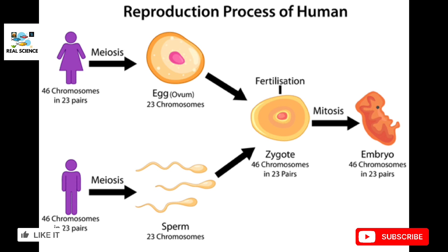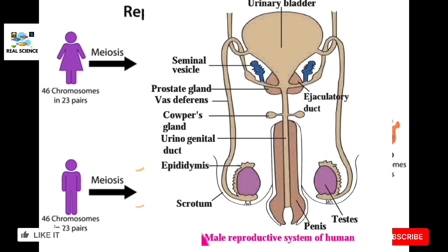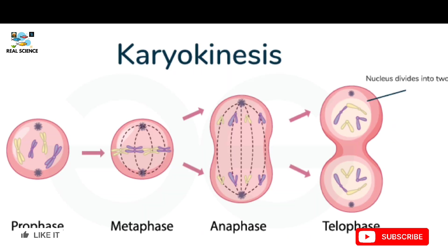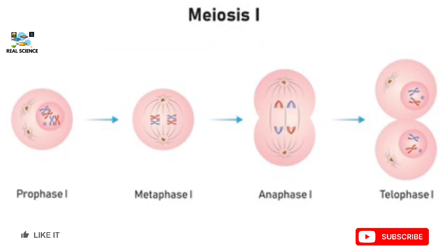This zygote then divides by mitosis to form an embryo and fetus, and later a child is born. Meiosis occurs in the ovaries of females and in the testes of males. Similar to mitosis, meiosis has two main stages: karyokinesis, which is division of the nuclei, and cytokinesis, which is separation of the cytoplasm by formation of two distinct cells.